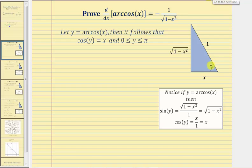Using this right triangle and labeling this angle y, we can label the adjacent side x and the hypotenuse one. And therefore, using the Pythagorean theorem, we can label the opposite side the square root of the quantity one minus x squared.